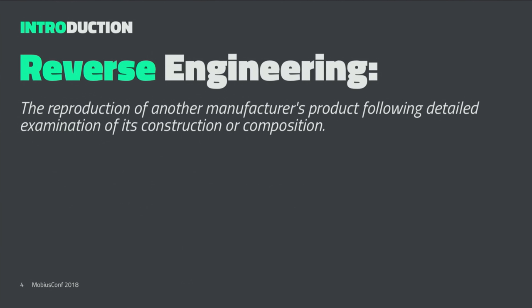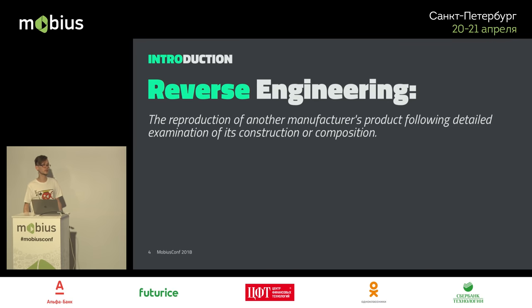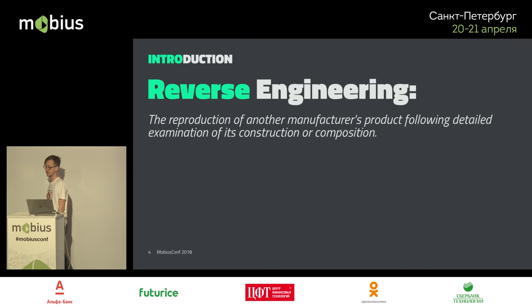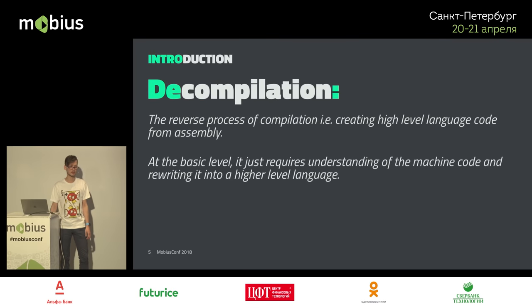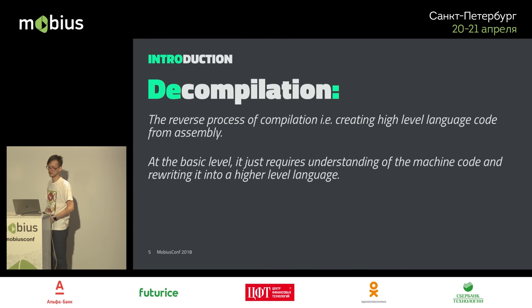What is reverse engineering? If you know what engineering is — taking an idea and building a product from it — in our computer world we have the idea, the blueprint of source code, and we transform it into a running program. Reverse engineering is the opposite: you take a program you got somewhere and try to find the original blueprint, learning as much about the program as possible. People usually think of it as the decompilation process — the reverse of compilation.